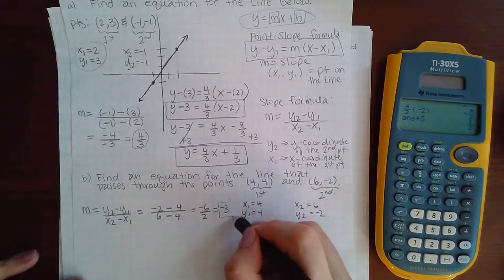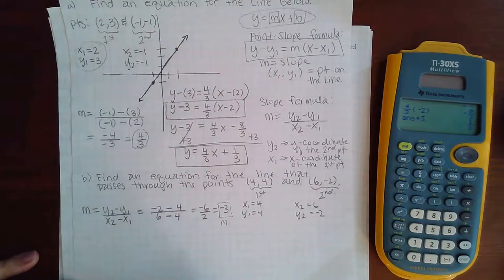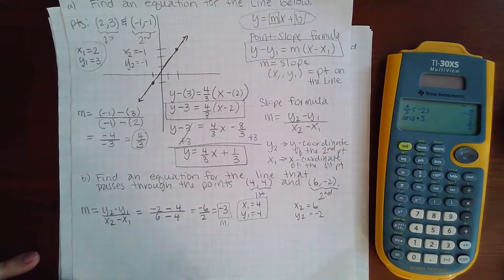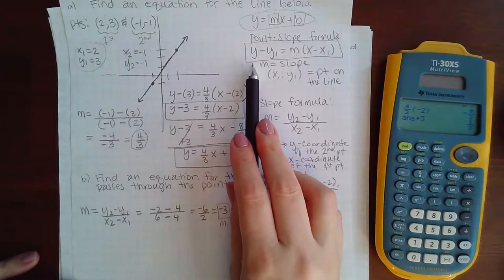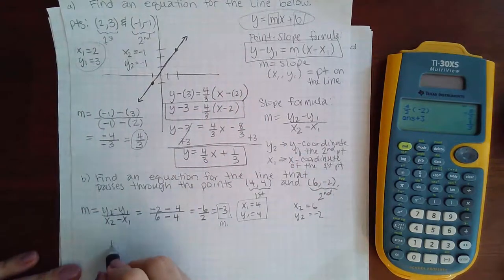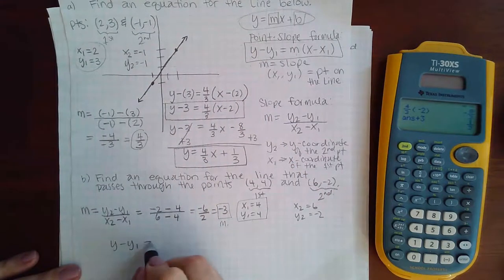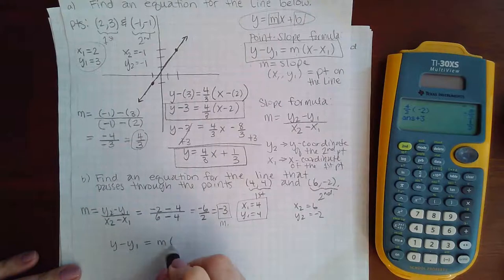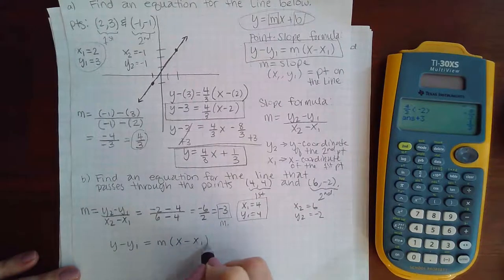Now I already know what x1 and y1 look like, so now I can write my equation using the point-slope formula. This guy up here. So point-slope formula is y minus y1 equals m times x minus x1.